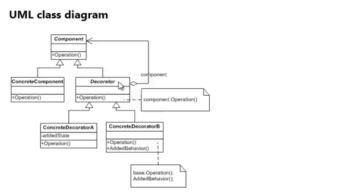This is very important: for the application that uses a decorated class, there is no distinction between using a decorated class or the class itself. So if we use the decorator we have the same operations as we would have on the concrete object. We have a component which is the interface or an abstract, we have the concrete component, and we have the decorator — and they all have the same operation method.